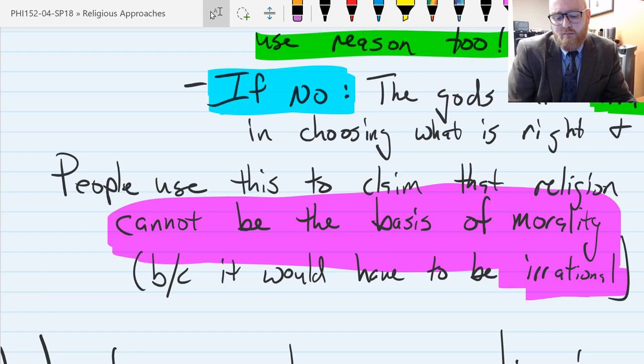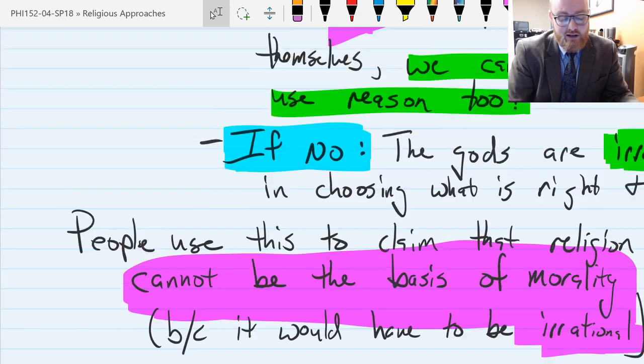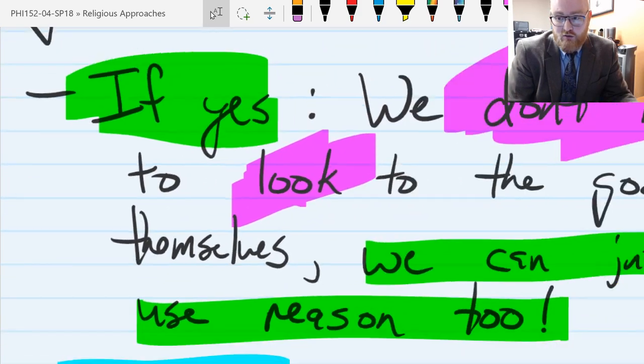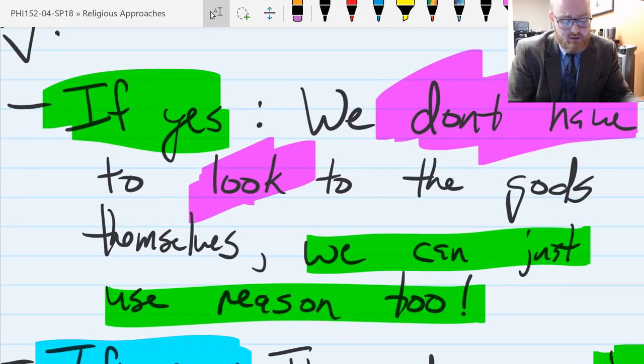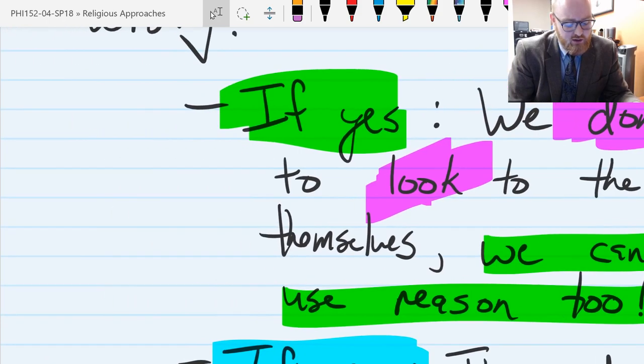That it doesn't seem to be possible that the divine is able to just say what is right and what is wrong without any kind of reason. And again, notice we can use reason too, if that's the case, that there is a reason behind morality.